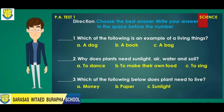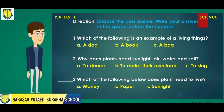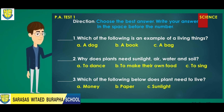Number one: Which of the following is an example of a living thing? A. A dog. B. A book. Or C. A bag.